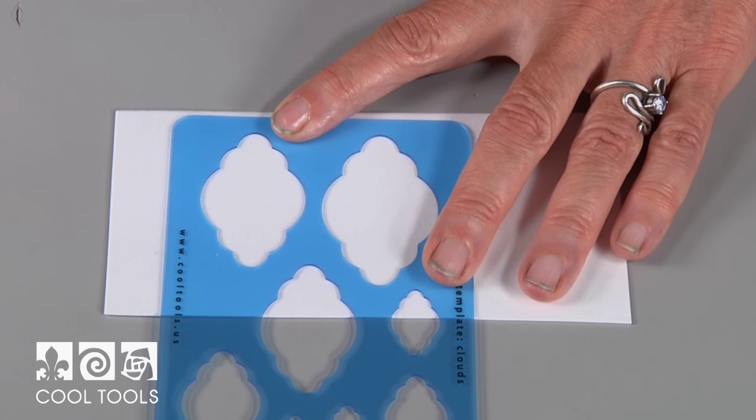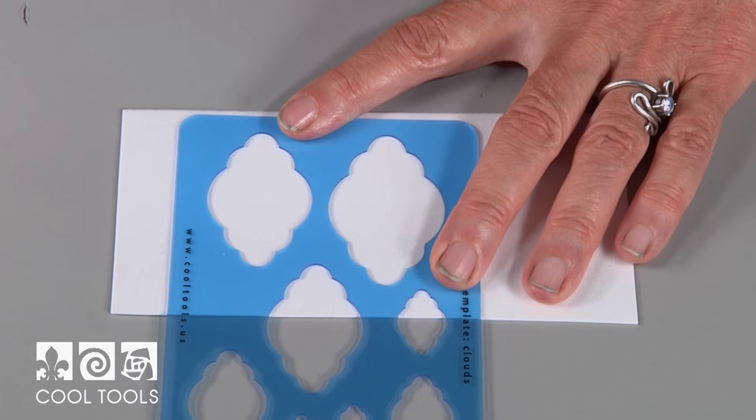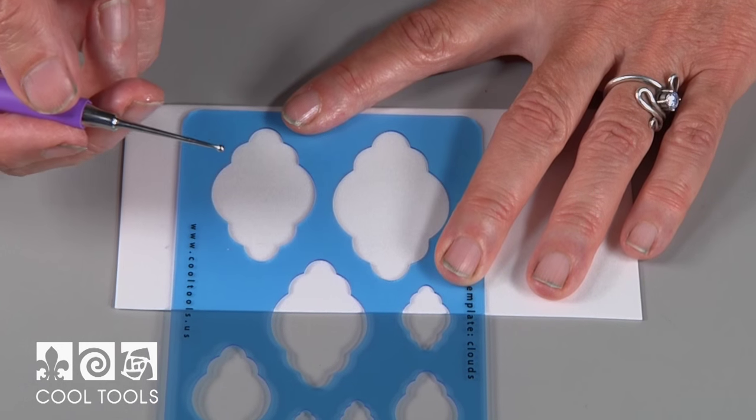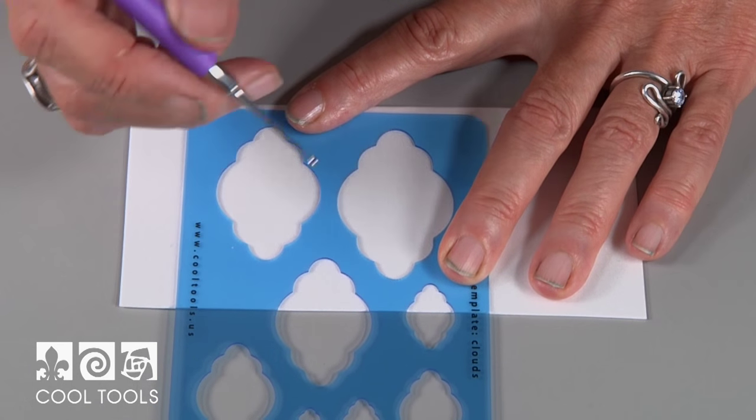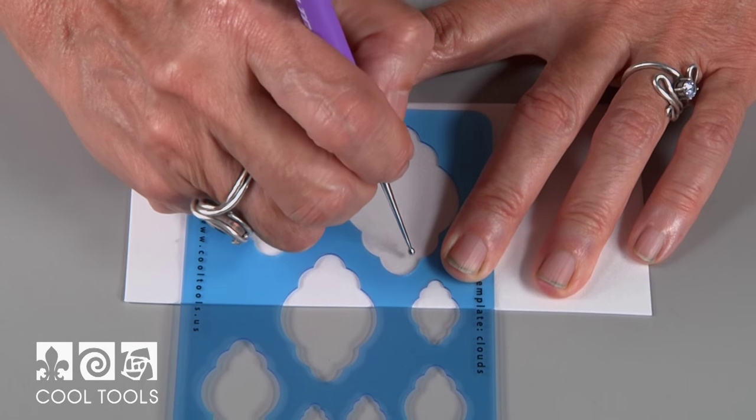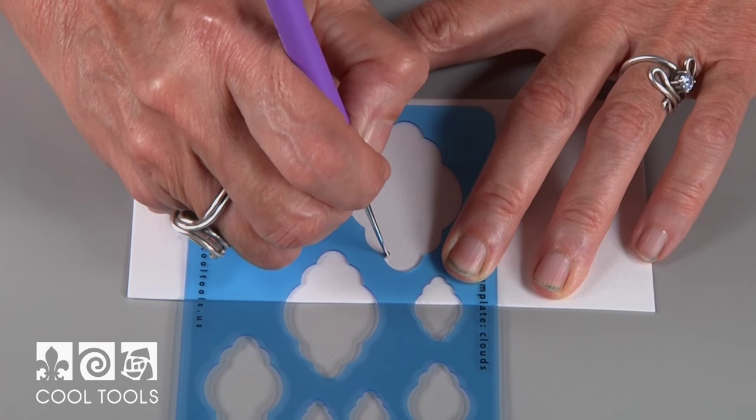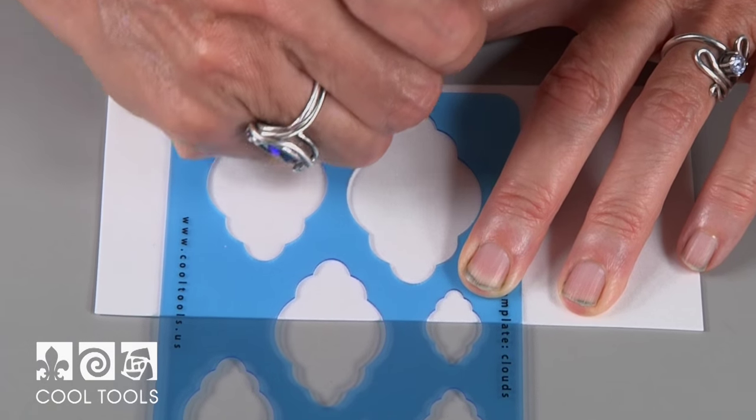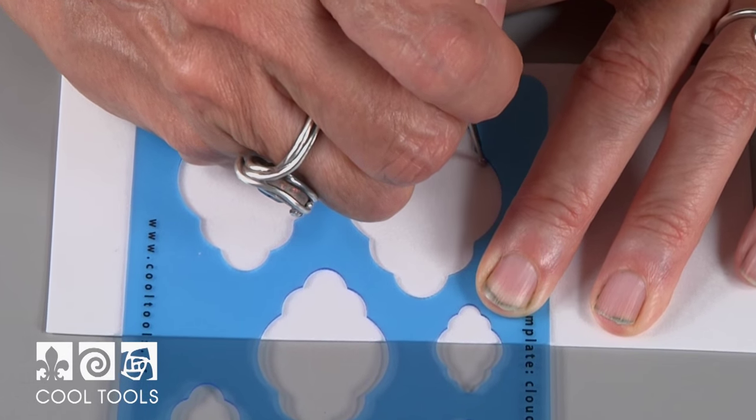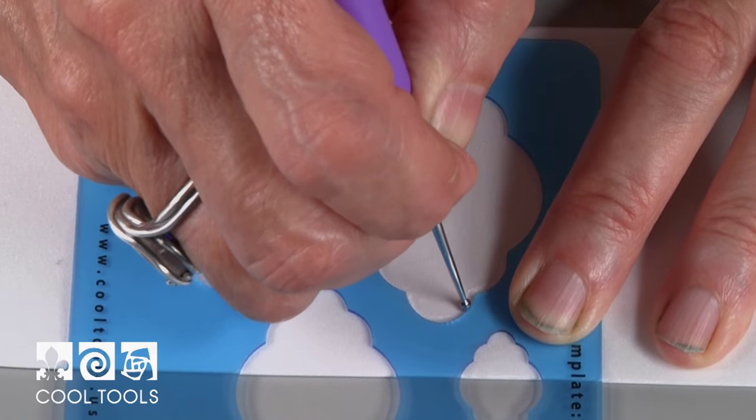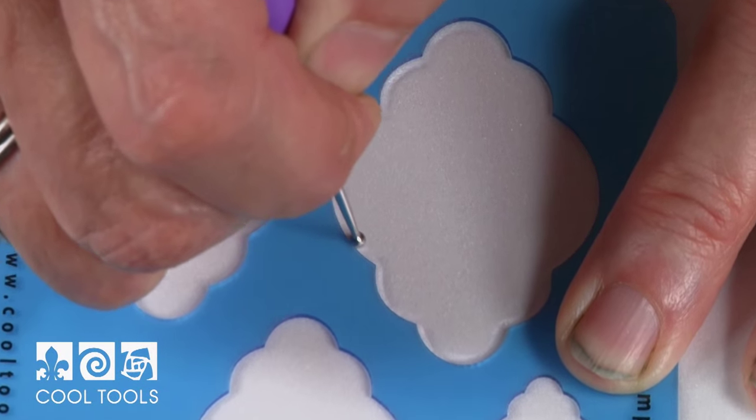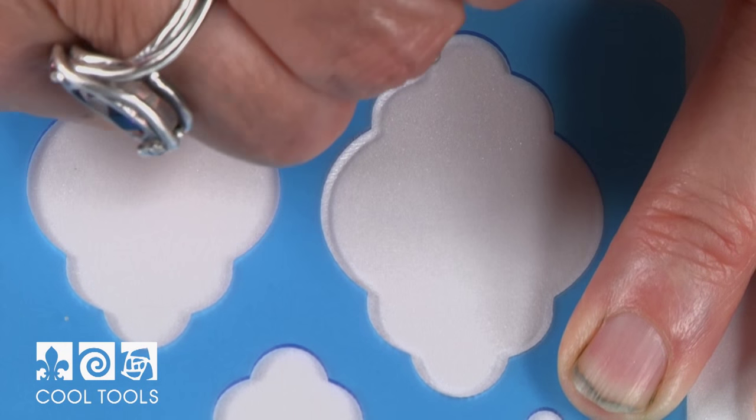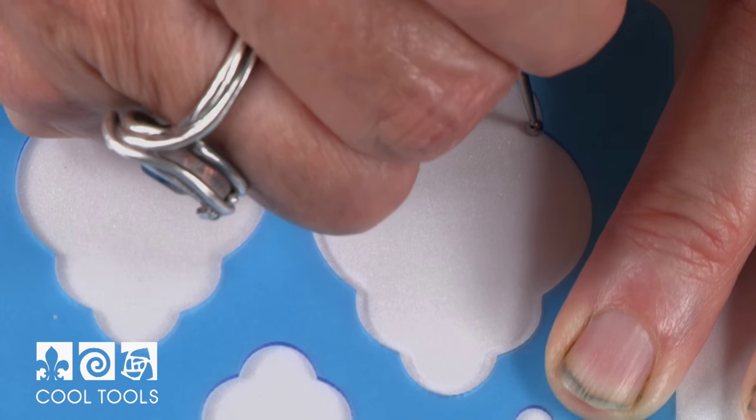So you want to anchor your template onto the scratch foam. I like to use a wider ball stylus because it gives me a nice framed look to my piece. And again, you want to use a gentle touch when you first start. You don't want to press too hard because you could gouge the scratch foam. So I'm going to go around two or three times - should be enough to deepen that line and give you a nice crisp outline.